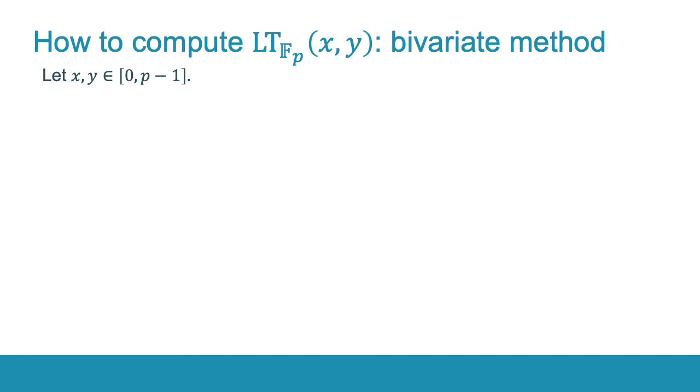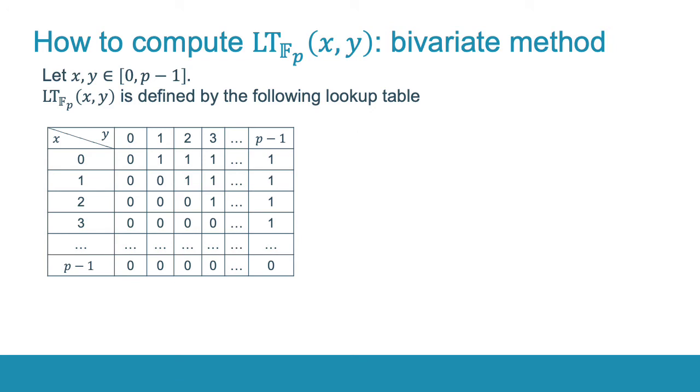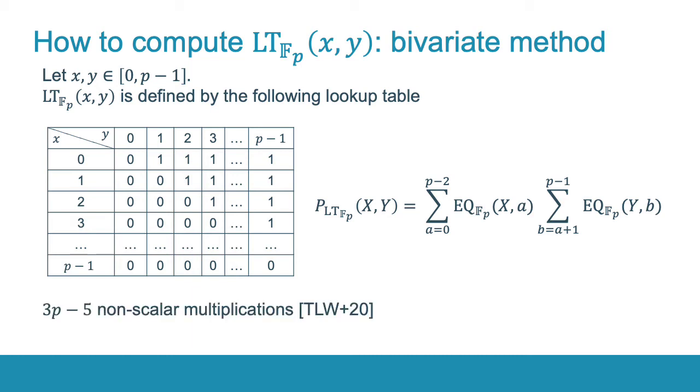The first method assumes that X and Y are integers between 0 and p-1. Then the less-than function is defined by the following lookup table, which contains only 1s over its main diagonal and 0s anywhere else. We can use the Lagrange interpolation to find the polynomial of this function, which will be of this form. Tan et al. showed in their paper that this polynomial can be computed in 3p-5 non-scalar multiplications.